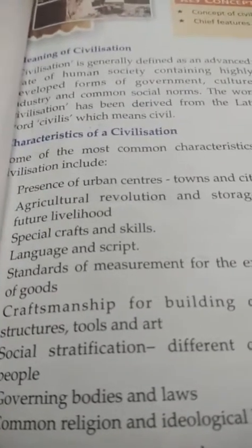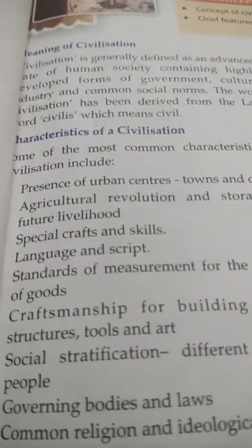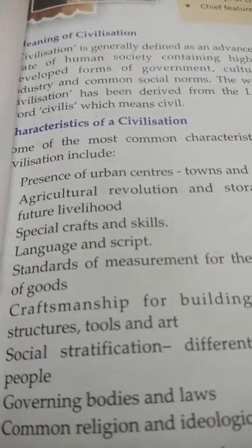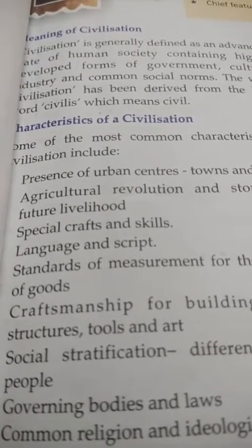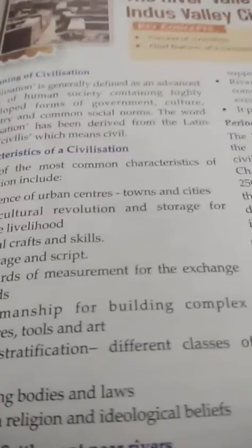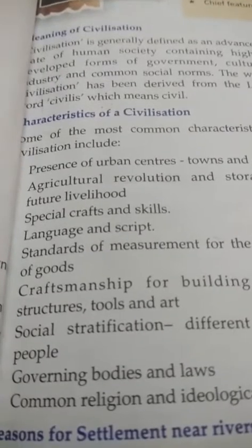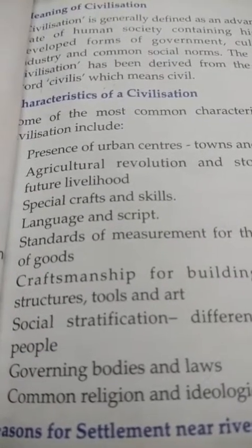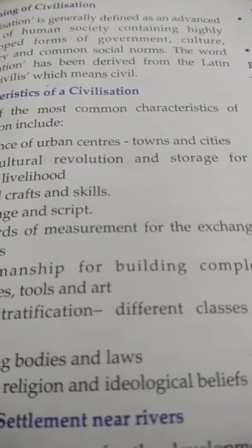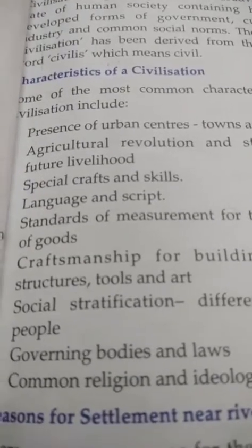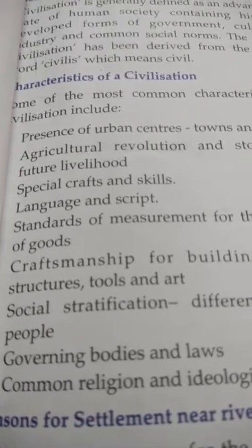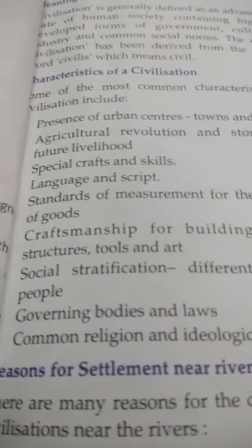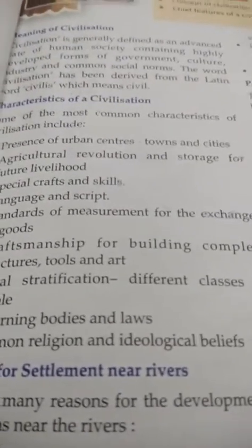Then, standard measurement for the exchange of goods. In that time, there was no buying or selling — they just exchanged their goods, so they needed a standard of measurement. Then, craftsmanship for building complex structures, tools, and arts. Then, social stratification — different classes of people must exist. Then, governing bodies and laws — a ruling class must be there following common laws. Then, common religion and ideological beliefs.